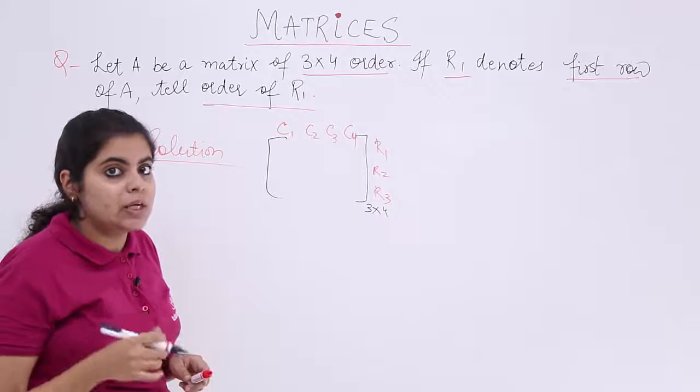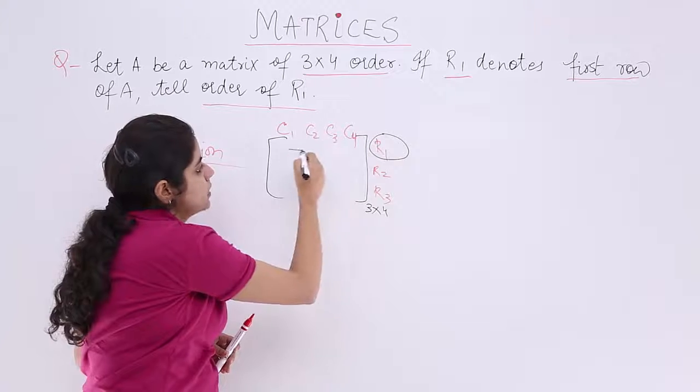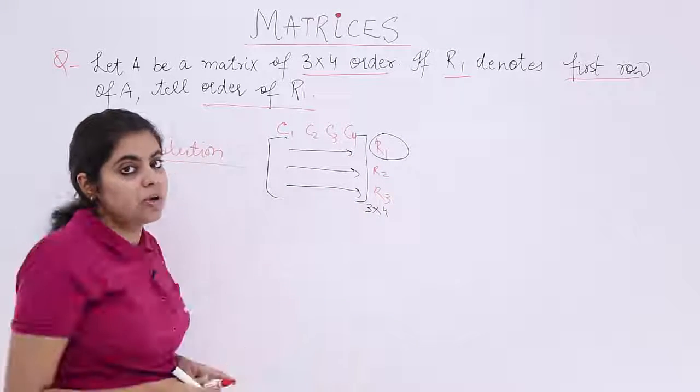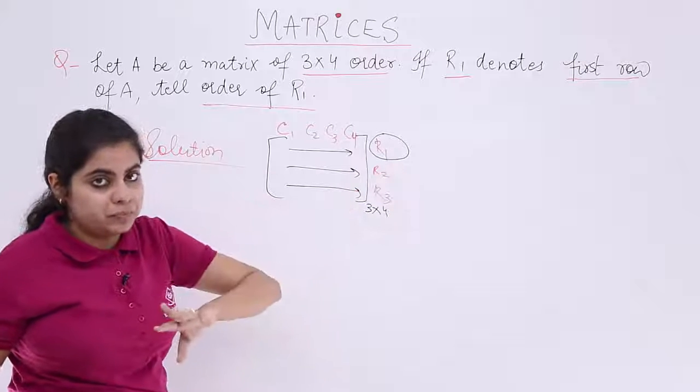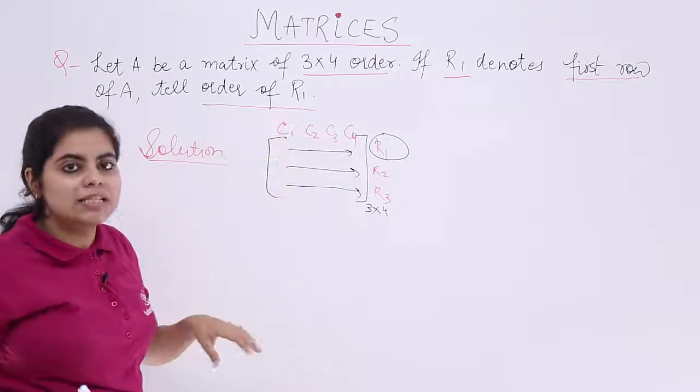Now, 3 rows and 4 columns are given to me and R1 is the first row. This is the first row. This is the second row. This is the third row. R1 is the first row. So, what am I supposed to find out? The order of R1. It is as simple as that.